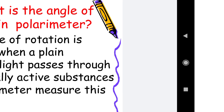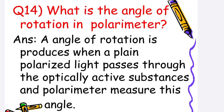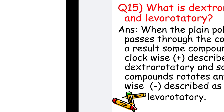What is the angle of rotation in a polarimeter? An angle of rotation is produced when plane polarized light passes through an optically active substance, and the polarimeter measures this angle.